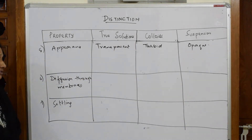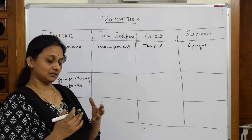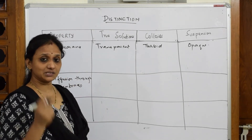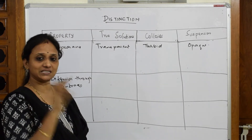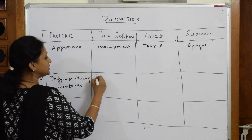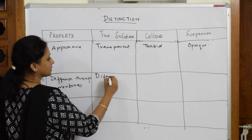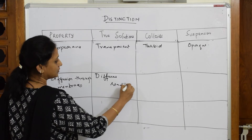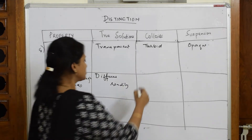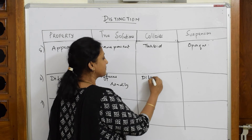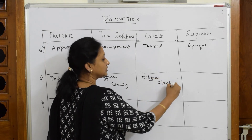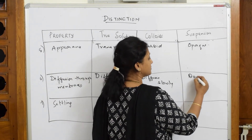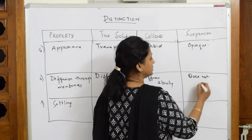For diffusion through membranes: true solutions, with particle size less than 1 nanometer, diffuse readily through membranes. Colloids, with slightly larger particle size, diffuse slowly. Suspensions, with particle size greater than 1000 nanometers, do not diffuse through membranes.